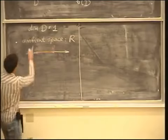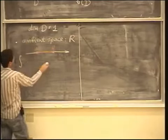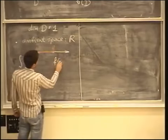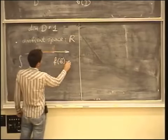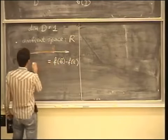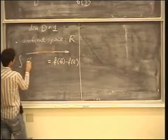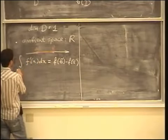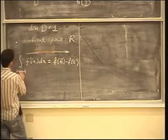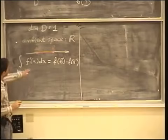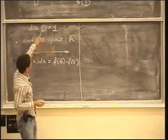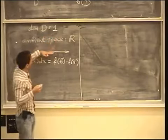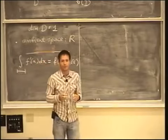So now we are in the realm of one-dimensional calculus. In this realm, the general formula takes the following shape: omega is just a function, and on the right-hand side we simply evaluate the function at the endpoints. On the left-hand side, we are integrating the derivative of this function over the interval. This corresponds to the smallest possible dimensions — our domain of integration is one-dimensional and it lives in the one-dimensional ambient space.